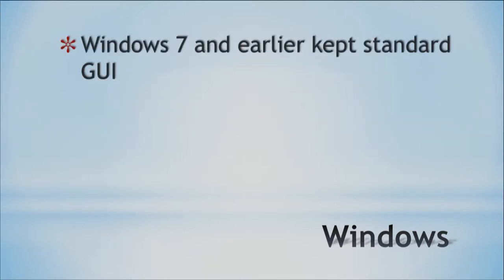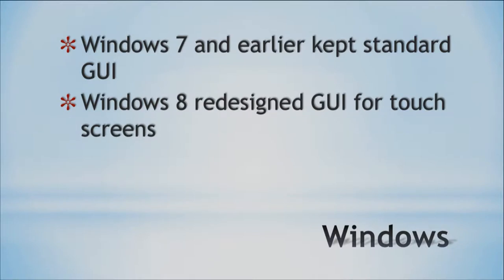Windows 7 and earlier kept the standard GUI — they all had the same style. Windows 8 changed things by redesigning the GUI for touch screens, so if you look at the differences between Windows 7 and Windows 8 the interfaces are quite different. It takes a little getting used to the new tile interface, but if you want to go back to the old-style start bar, you can find apps that allow you to do that with a quick Google search. So if you don't like the tile interface, you're not stuck with it.